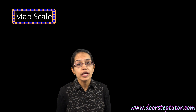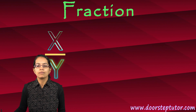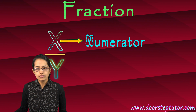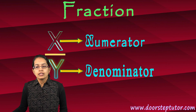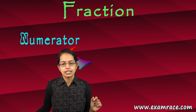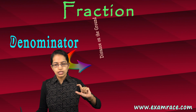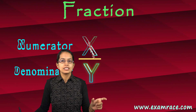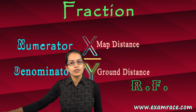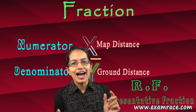When I talk about map scale, it is very important to understand the concept of numerator and denominator — the very basics of mathematics where we talk about a fraction. X by Y is a fraction where X is the numerator and Y is the denominator. On the numerator, I keep the distance on the map, and on the denominator, I keep the distance which is onto the ground. This ratio of map distance to ground distance is what is known as RF, or representative fraction.